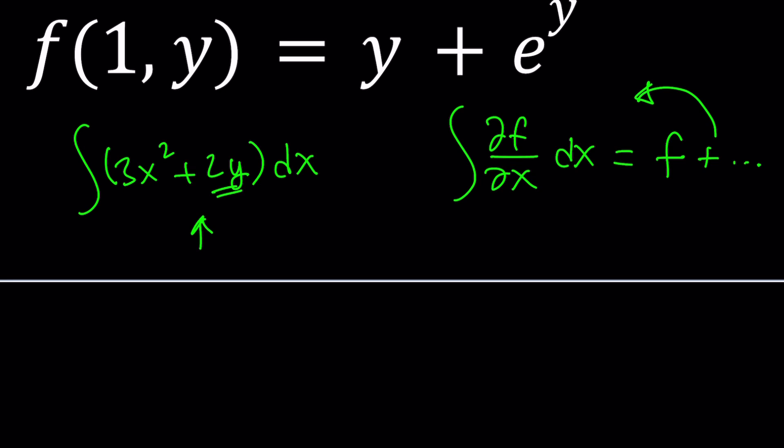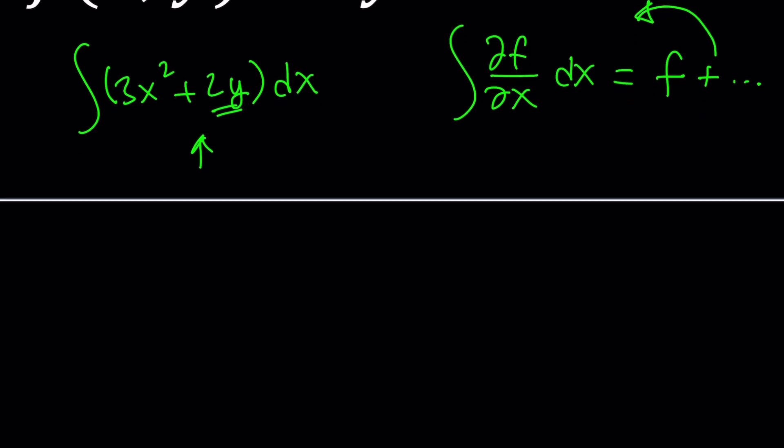And 3x², if you integrate it by the power rule, it's going to become x³. And it's going to give you f(x, y), because f is a function of two variables. And since 2y is a constant, the integral of 2y is just going to be 2yx. Why? Because if you were integrating, let's say, 2 dx, that would be 2x, right?